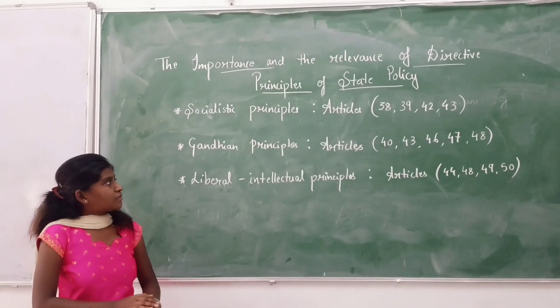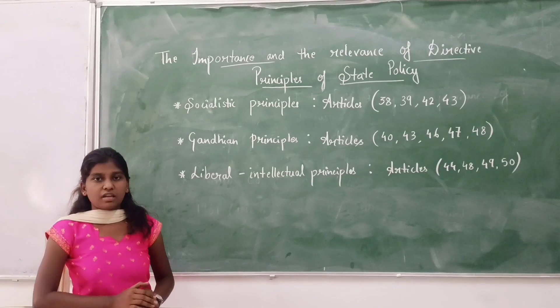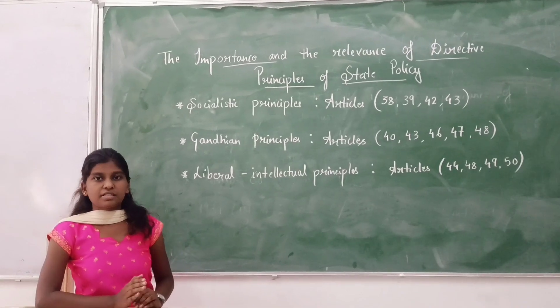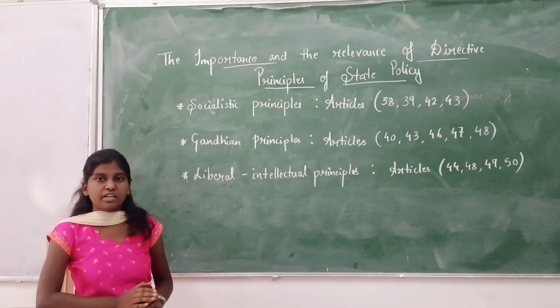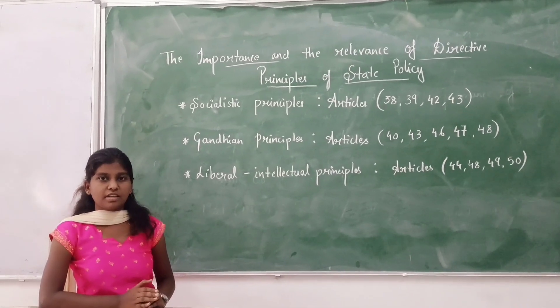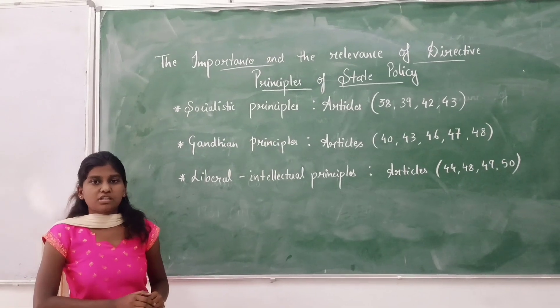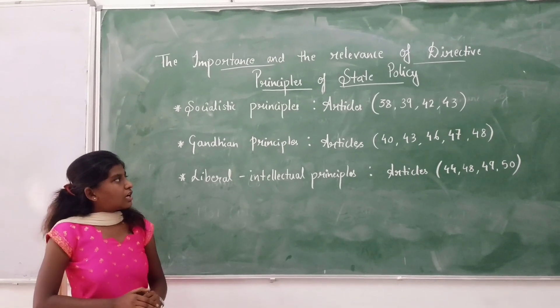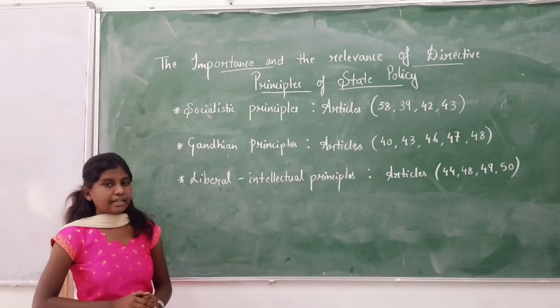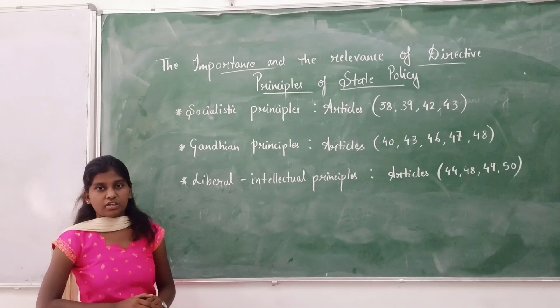The first one: socialistic principles. Socialistic principles are the principles that aim at providing social and economic justice, which set the state towards welfare. It includes articles 38, 39, 42, and 43.